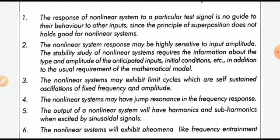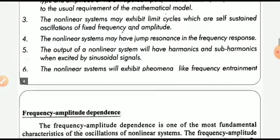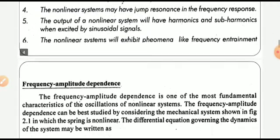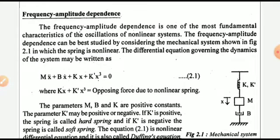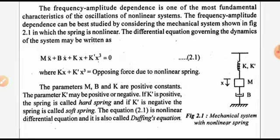The fifth point is that the output of nonlinear systems may have harmonics terms. The sixth point is that nonlinear systems exhibit phenomena such as frequency entrainment and asynchronous quenching. To give the idea about frequency-amplitude dependence — it is one of the most fundamental characteristics of the oscillations of nonlinear systems. For that, consider a mass-spring-damper system.